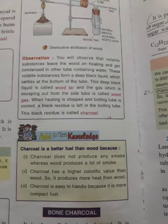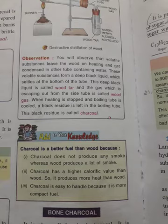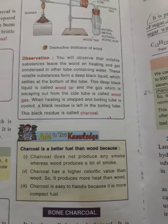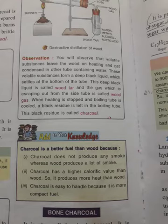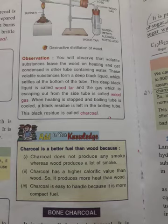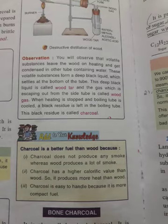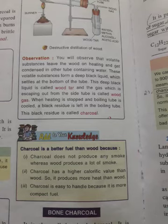Wood charcoal can be converted into activated charcoal. When wood charcoal is heated in steam to around 900 degrees Celsius, it becomes activated charcoal. This activated charcoal has a much higher adsorption capacity and is used in the purification of substances.